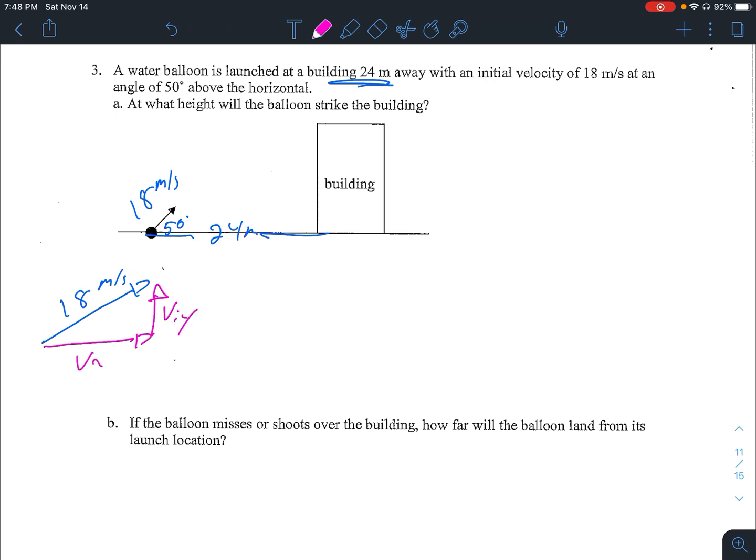So the first thing we know we can do, even if we had no direction, like how to solve the problem, is to figure out the components. So this is our VIY, our VX, and the 50 degrees. I'm going to go a little bit more of a shorthand notation here, just because of space. So VX, I'm going to go cosine VX over 18 meters per second, and that's going to be about 11.6 meters per second. My VIY, I'm going to use sine.